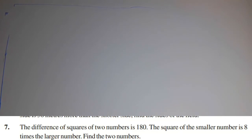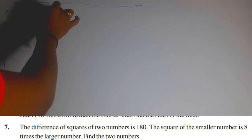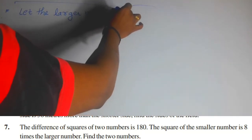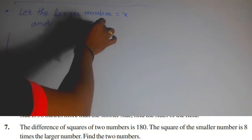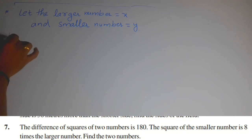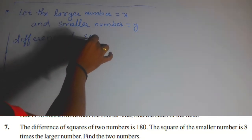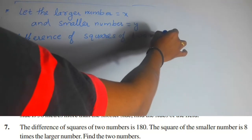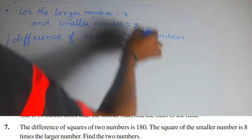First, take the larger number as x and the smaller number as y. So let the larger number be equal to x and the smaller number be equal to y. Now from the question, the given condition is: the difference of squares of two numbers is equal to 180.